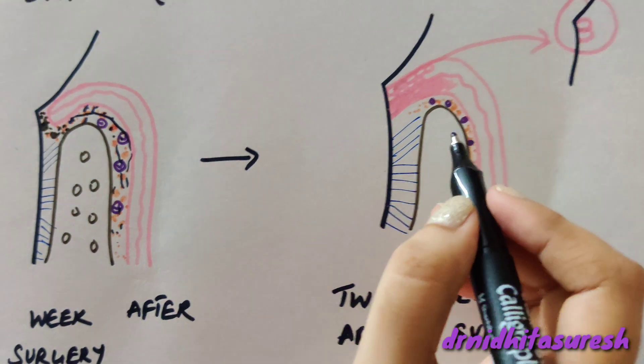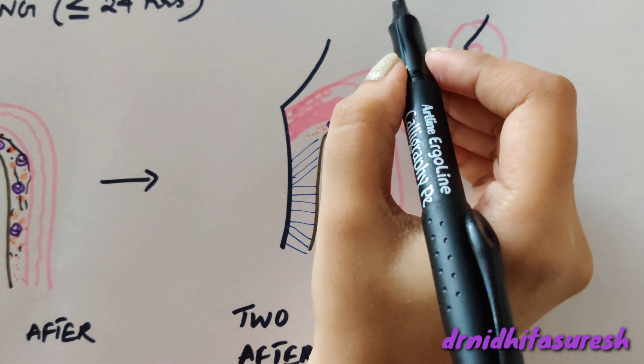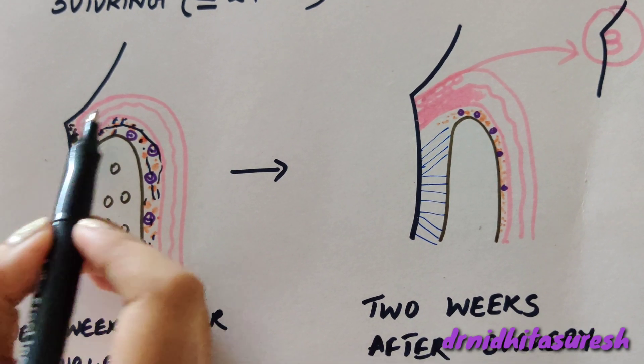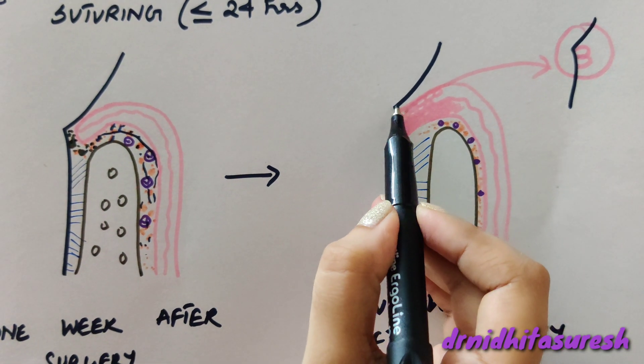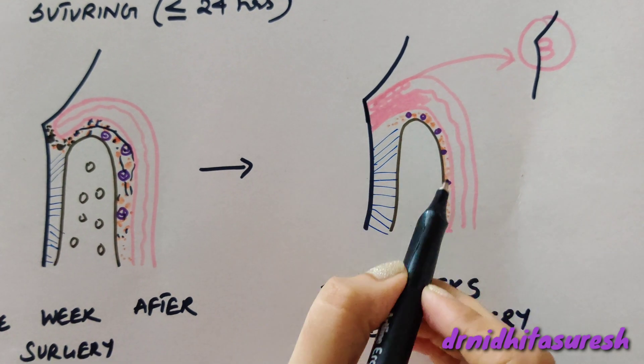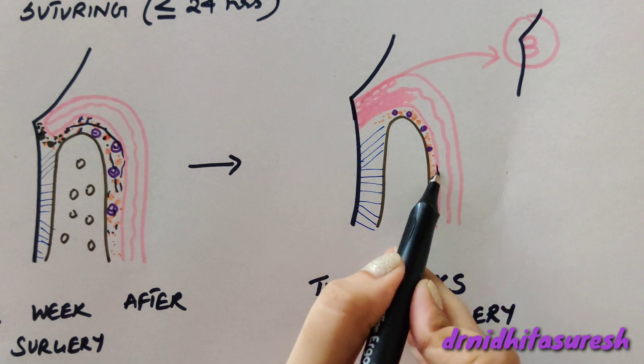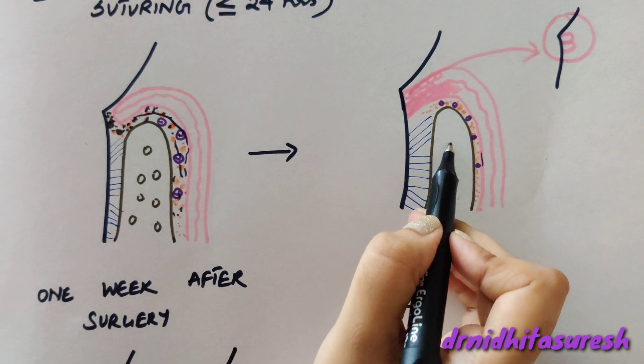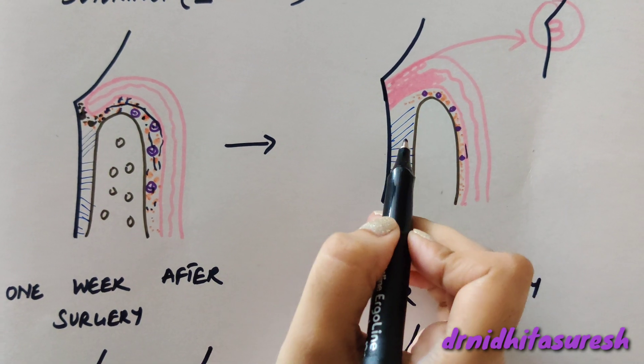After one to three days, the epithelium will start migrating and contacting the tooth at this point. The space between the flap, bone, and tooth will get reduced where you have the blood clot.